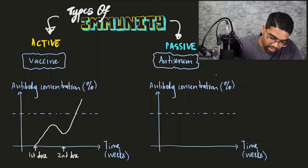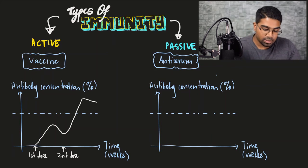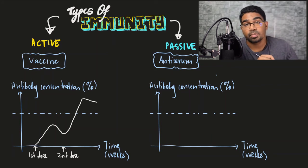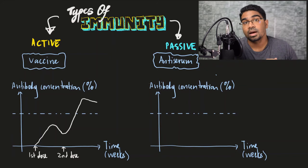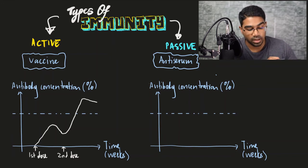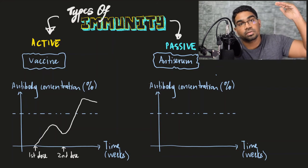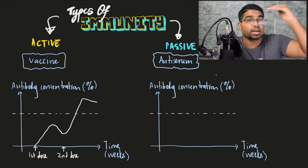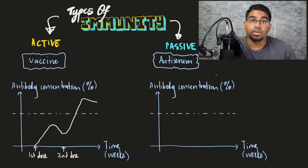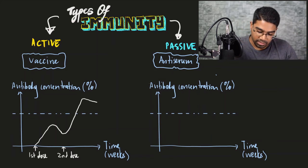The dotted line represents the effective concentration of antibodies needed to fight against and keep the disease under control. After the booster dose, the level comes down very slowly — that's why it lasts a very long time, sometimes through a whole lifetime. The first dose alone may not be enough to reach this level, which is why a booster is administered.